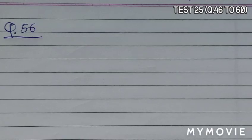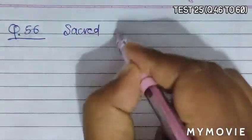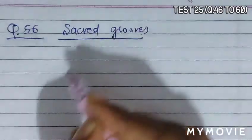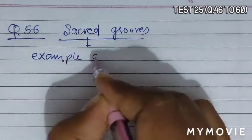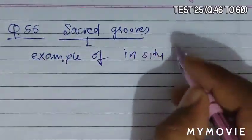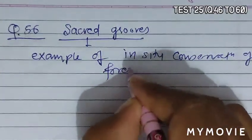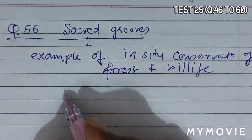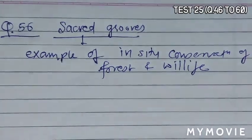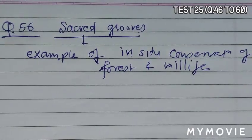Question 56 asks that sacred groves are specially useful for what. So when we talk about sacred groves, sacred groves are an example of in-situ conservation of forest and wildlife, especially of rare and threatened species. These forest patches are found around places of worship which are held in high esteem by tribal communities.